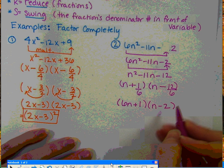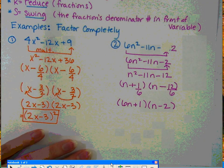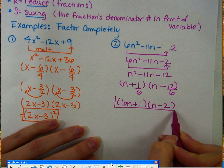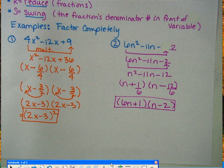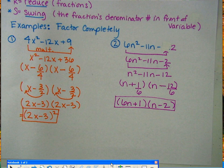So for this, now this would be my completely factored solution. Could I write n - 2 times 6n + 1 instead and reverse the order? That would be fine.